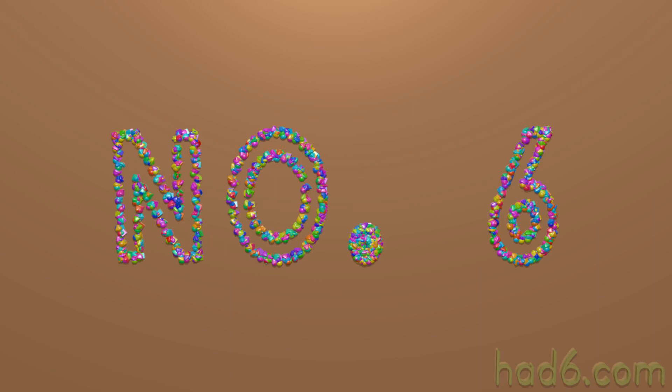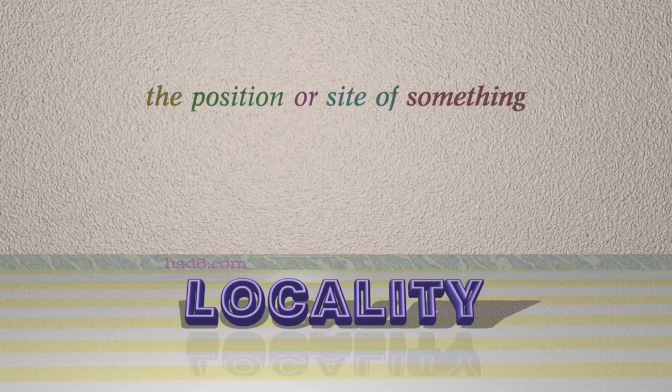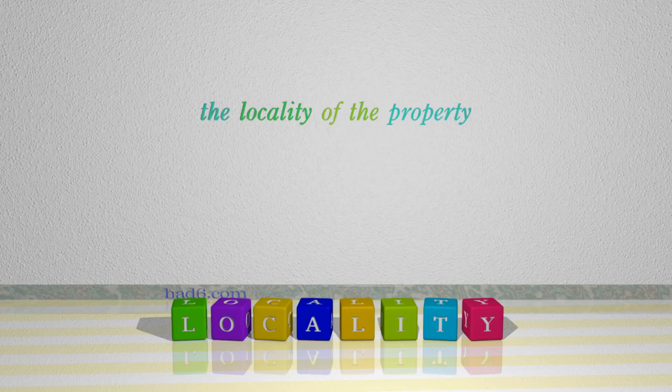Number 6: Locality. Which means the position or site of something. For example: The locality of the property.